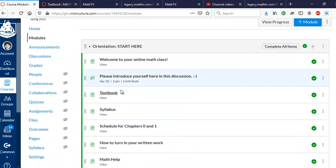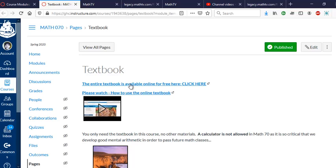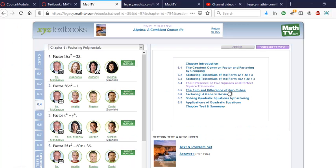For textbook, you go to modules. You click on textbook page. There it is. You click this link. It brings you to textbook page. Run Adobe Flash.